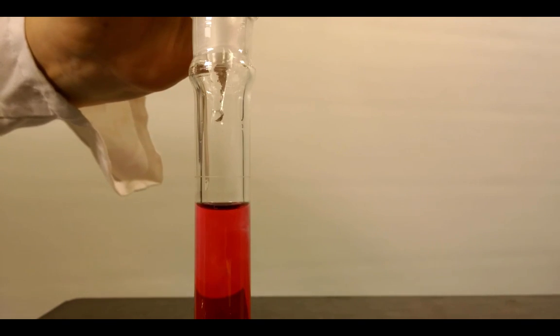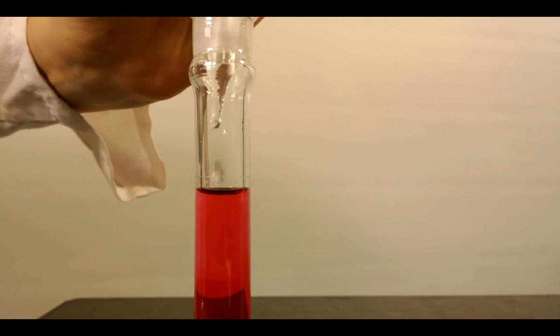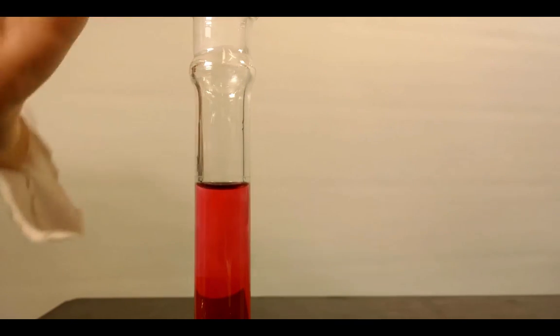Drops should be added into the middle of the neck of the flask rather than down the walls. This allows for better visualization of the meniscus.